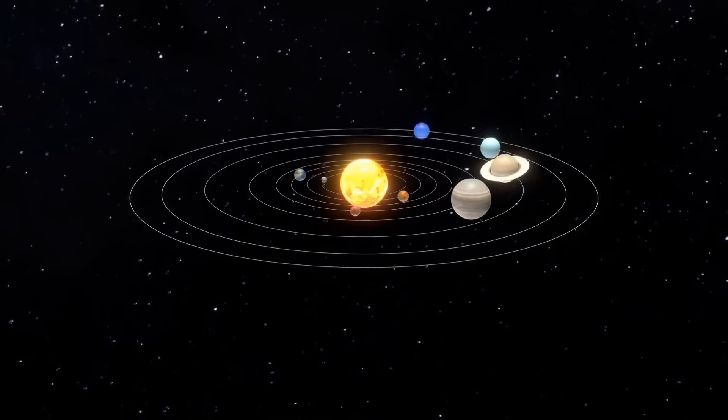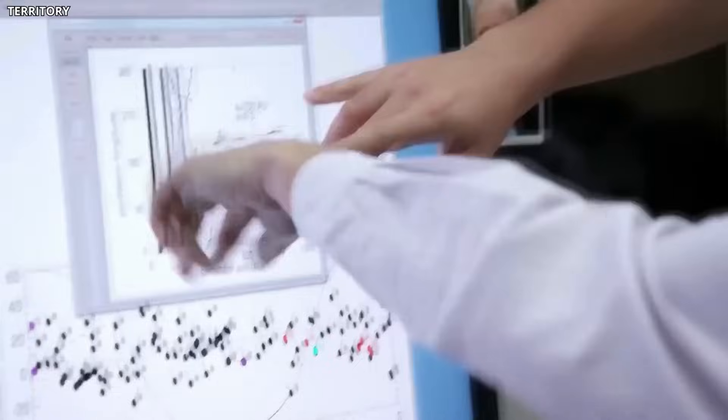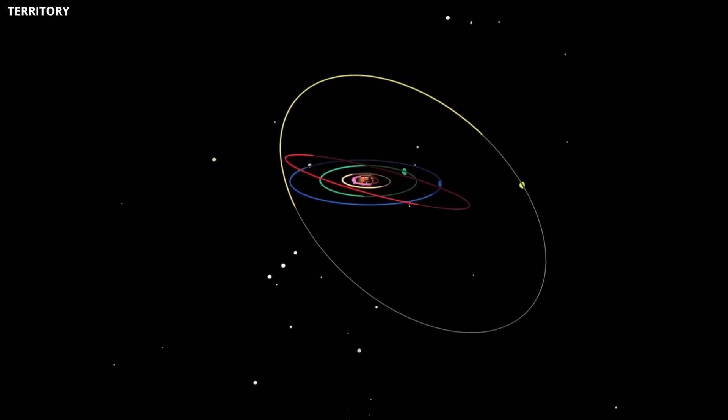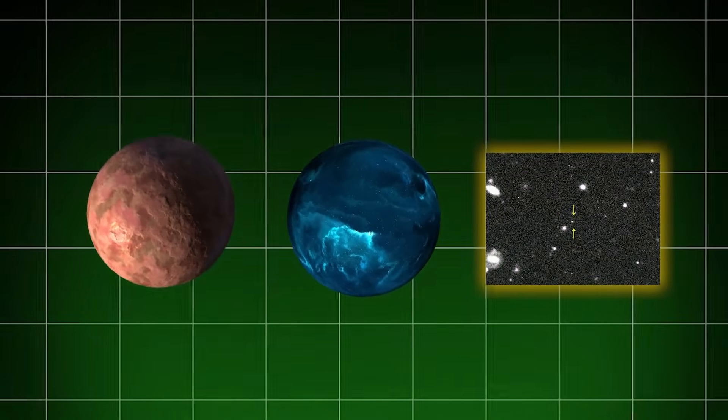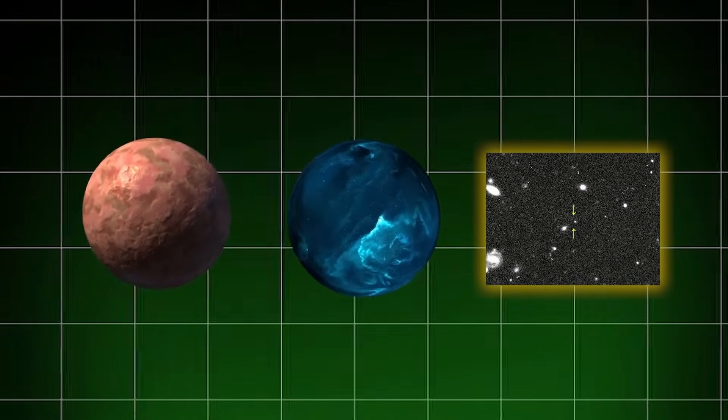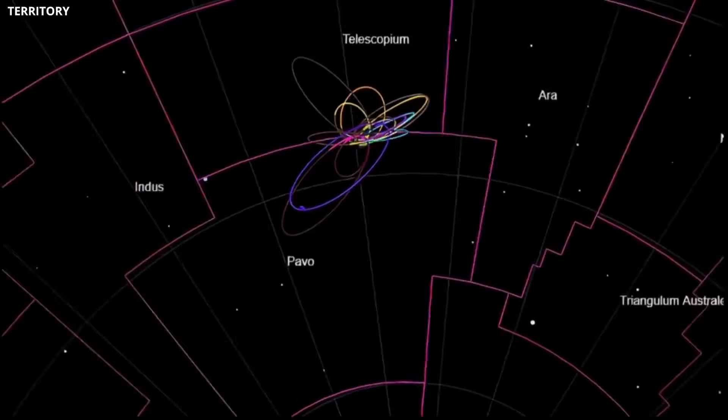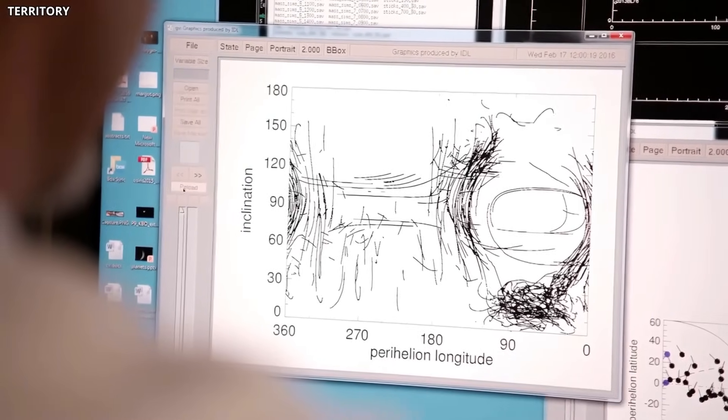Still, even the skeptics admit that the outer solar system is far more complicated than we thought 20 years ago. Every time a new extreme object is found, like Sedna, Ammonite, or 2017 OF201, it adds another piece to the puzzle. Sometimes that piece fits neatly. Other times, it forces scientists to rethink the whole picture.